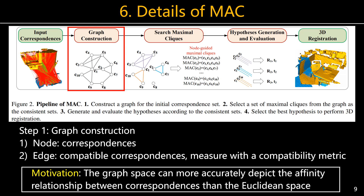The first step is graph construction. The motivation behind it is that in Euclidean space, correspondences are irregular and unordered. To better capture the compatibility relationship among correspondences, we model the input correspondences as a graph. In particular, compatible nodes are connected in the graph.